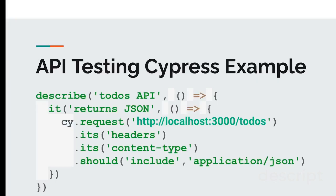Now let's see a very simple API testing code with a Cypress example. If you're not familiar with Cypress, please check all my videos regarding Cypress for beginners — you will understand the Cypress functionality, the different methods used in the framework. If you are familiar, you will easily understand: there is a describe block and an it block, and Cypress has a number of methods for API testing.